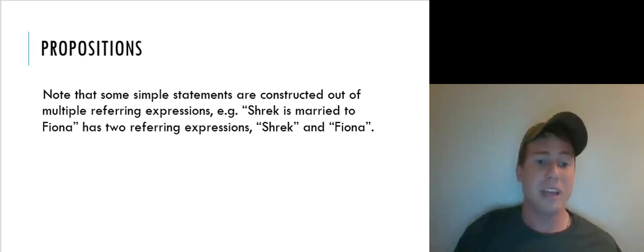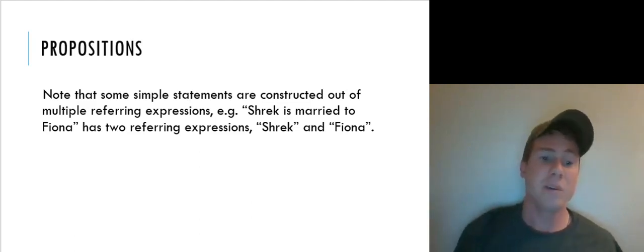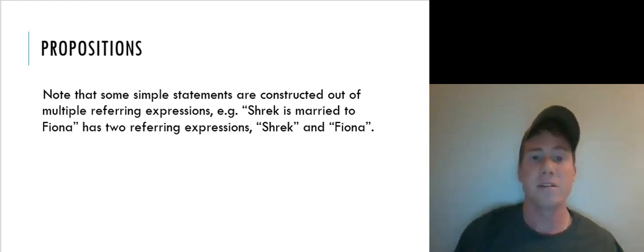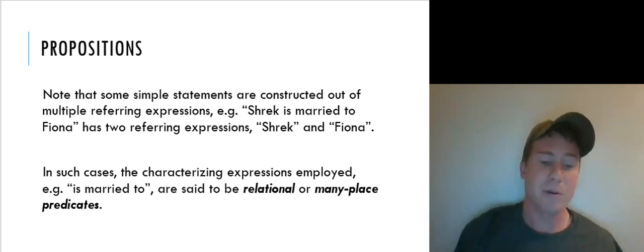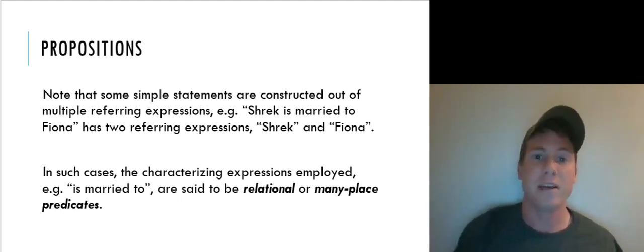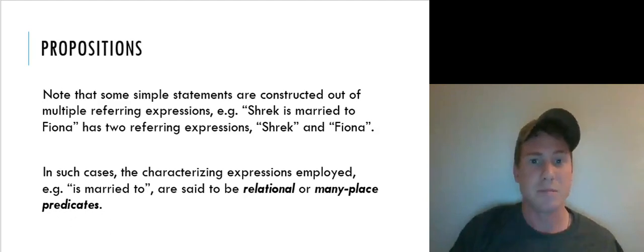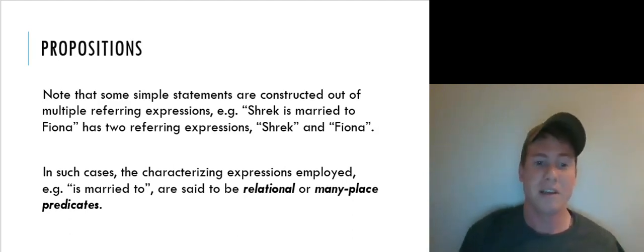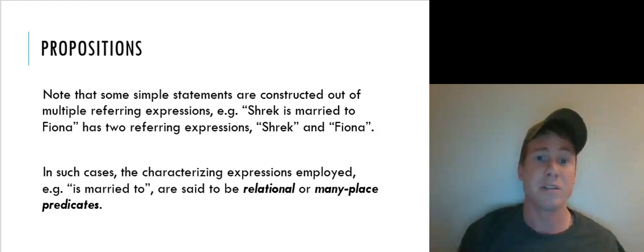Some simple statements are constructed out of multiple referring expressions. For example, 'Shrek is married to Fiona' has two referring expressions — both Shrek and Fiona — picking out two entities. The characterizing expression 'is married to' is called a relational or many-place predicate because it connects multiple referring expressions. This distinction won't matter too much for our purposes, but it would be discussed in more depth in other logic courses like LPS30.